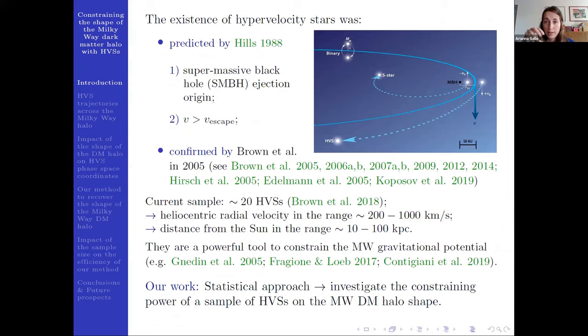When the stellar binary has a close pericenter passage near the supermassive black hole, it can be disrupted and one star is captured by the black hole and the other one is ejected as a hypervelocity star with a very high speed.